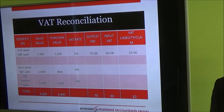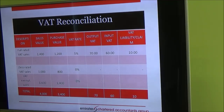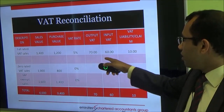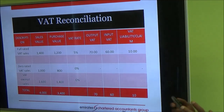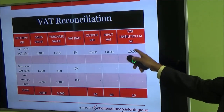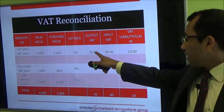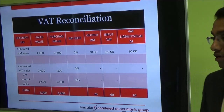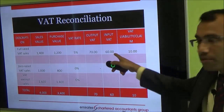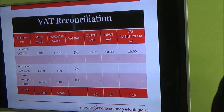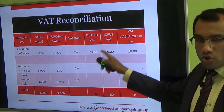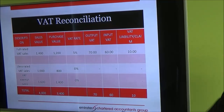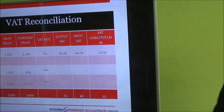Now let us do the VAT reconciliation — input versus output. For the full-rated products: purchase value 1,200, sales value 1,400. Output VAT is 70 dirhams, input VAT is 60 dirhams, and the difference — the VAT liability — is 10 dirhams only. They collected 70 from the customer, paid 60 to the supplier, and the difference of 10 must be paid to the VAT authority. For 0-rated and exempt there is no input or output VAT. This is VAT reconciliation — very simple.